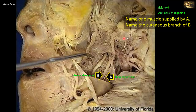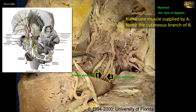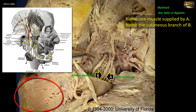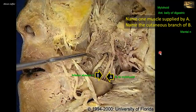Nerve B, the inferior alveolar nerve itself, is purely sensory. It supplies the mandibular teeth and gives a branch, the mental nerve, that leaves the mandible through the mental foramen to supply the skin of the chin and lower lip. This is the cutaneous branch of the inferior alveolar nerve — the mental nerve.